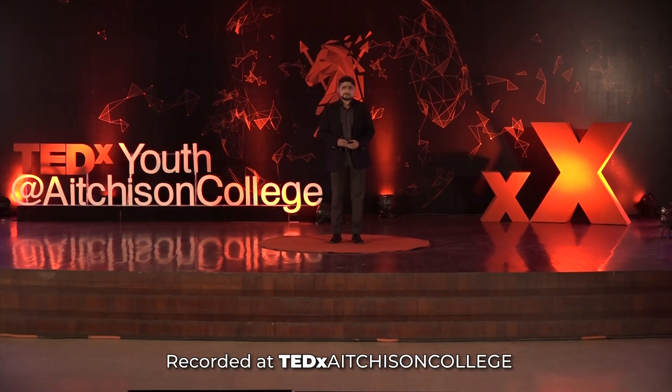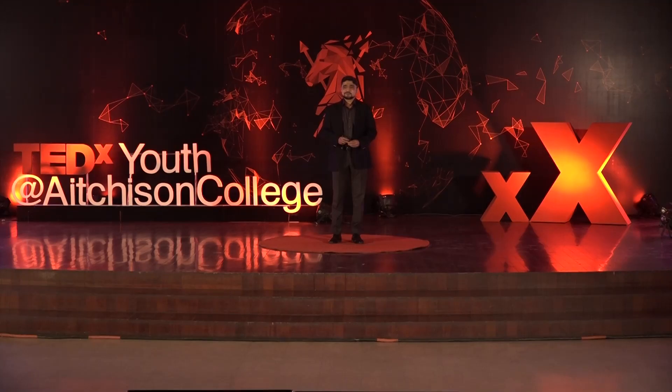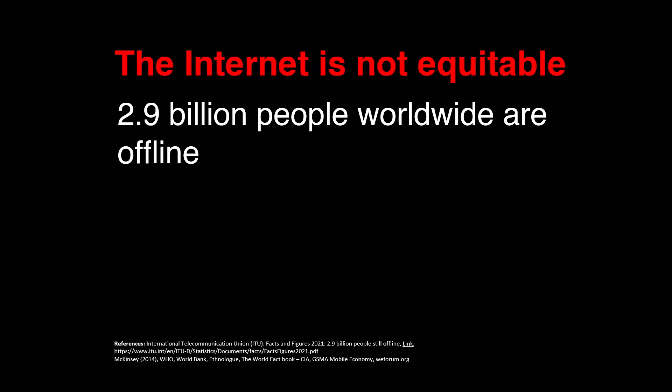Let me ask a naive question. Does the internet of today exclude anyone? Unfortunately, the answer is yes. It excludes one-third of the world population — that is 2.9 billion people across the globe. Let that sink in. These people are either too poor to afford the internet, too remote to access it, or too low-literate to use the mostly text-driven internet. And these 2.9 billion people are disproportionately spread across the globe, mostly residing in developing countries.